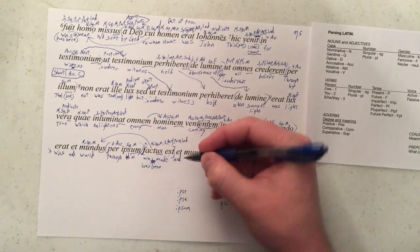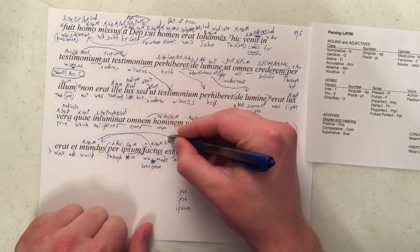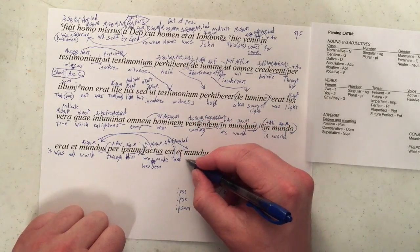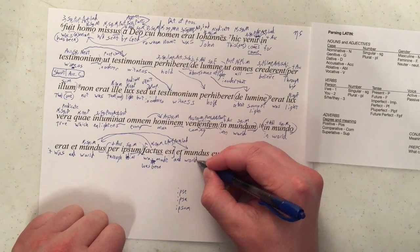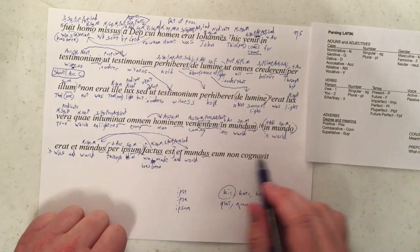Et, and, repetition of mundus. Take an arrow over here. World. Again, our subject. Cognovit.